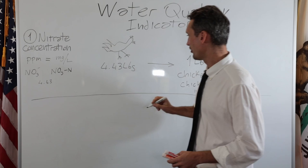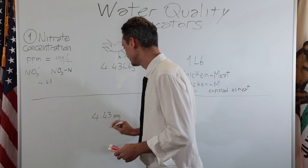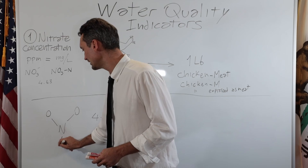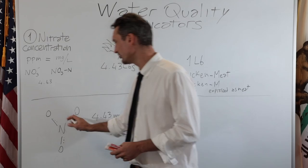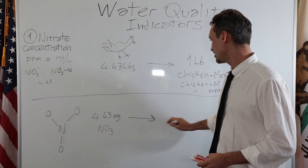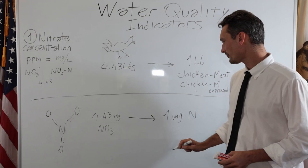So nitrate kind of works a little bit like a chicken. So if you get 4.43 milligrams of nitrate, this is what the molecule of nitrate looks like. It has one nitrogen in the middle, and three oxygen, and the oxygen weighs more or less like the nitrogen. So you have all these parts that you don't use, like in the chicken. And every 4.43 milligrams of NO3, there is one milligram of N, of nitrogen.